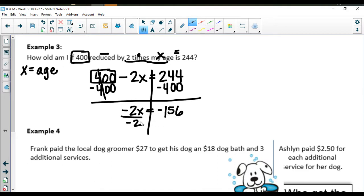Divide through by the negative 2 because these are multiplied together. And we get that X is equal to 78. Seventy-eight represents an age so we would say 78 years old.